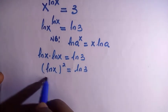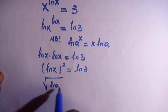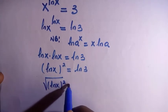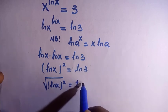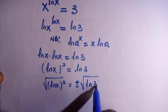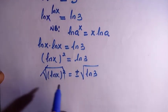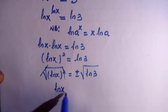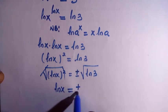So we take the square root of both sides to eliminate the square. We have this as plus or minus the square root of ln of 3, and by cancelling, we have ln x equals to plus or minus the root of ln 3.